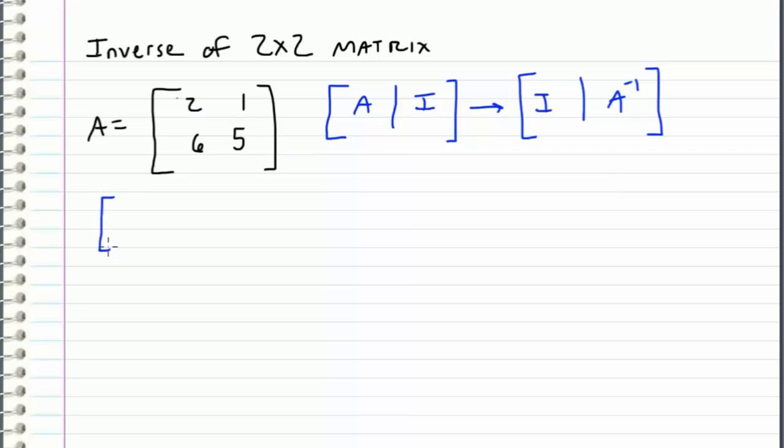So let's begin this by writing out the matrix 2, 1, 6, 5 and let's augment it with the identity matrix which is just ones along the diagonal with zeros everywhere else.